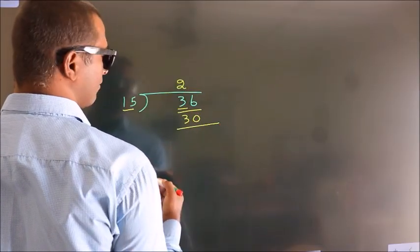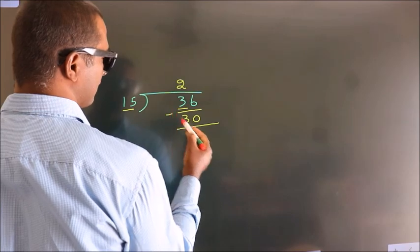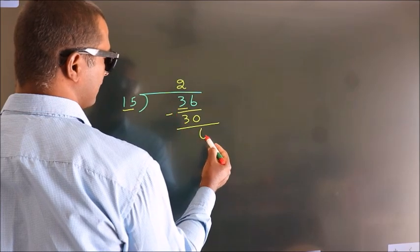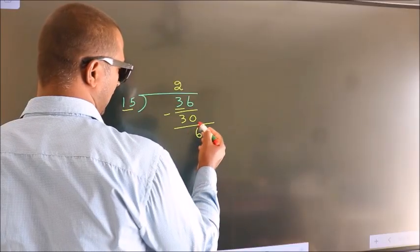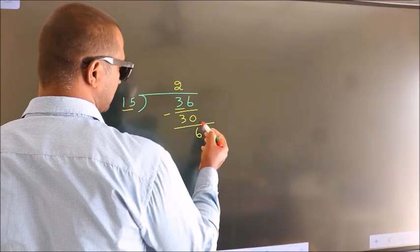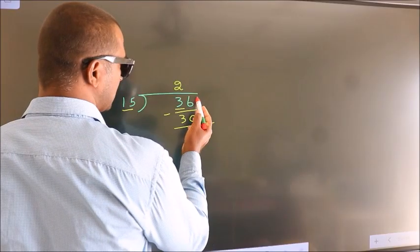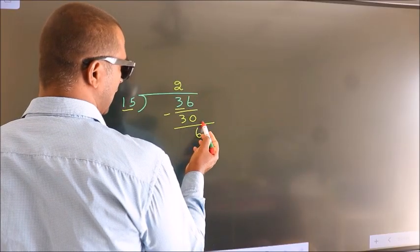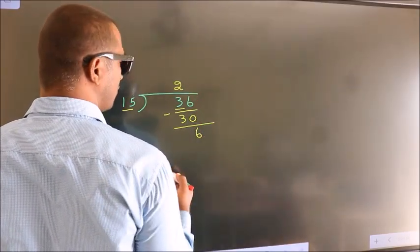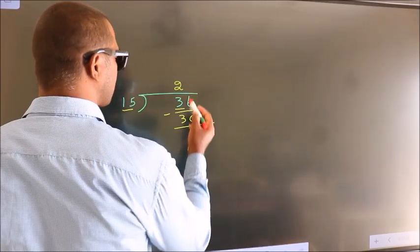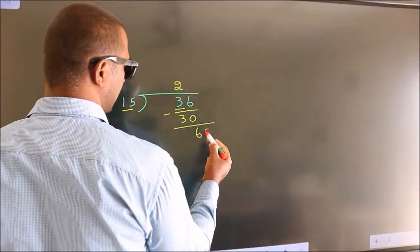Now we should subtract. We get 6. After this, there are no more numbers to bring down. So what we do is put a dot and take 0.